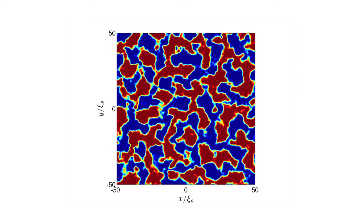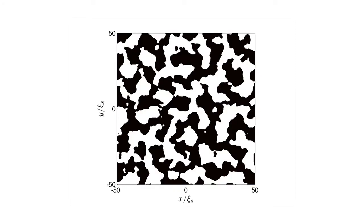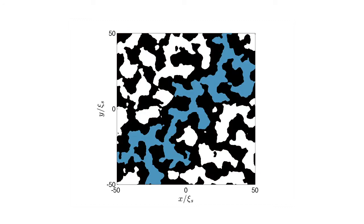We analyse the structure of these domains once they form. To do this, we have applied the ideas of percolation theory. Notably, we focus our attention on the positive or upward-pointing spin domains. We can make a binary image by setting all positive domains to be white. We examine if any of these domains percolate across the system. Here is an example of a percolating domain that connects from the lower boundary to the top boundary; this domain also happens to connect the left and right boundaries.